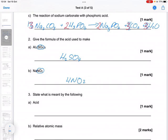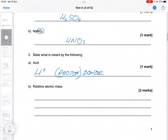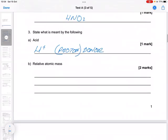Question three: state what is meant by the following. So an acid is a proton donor, although at this point we've probably got it as a hydrogen ion.